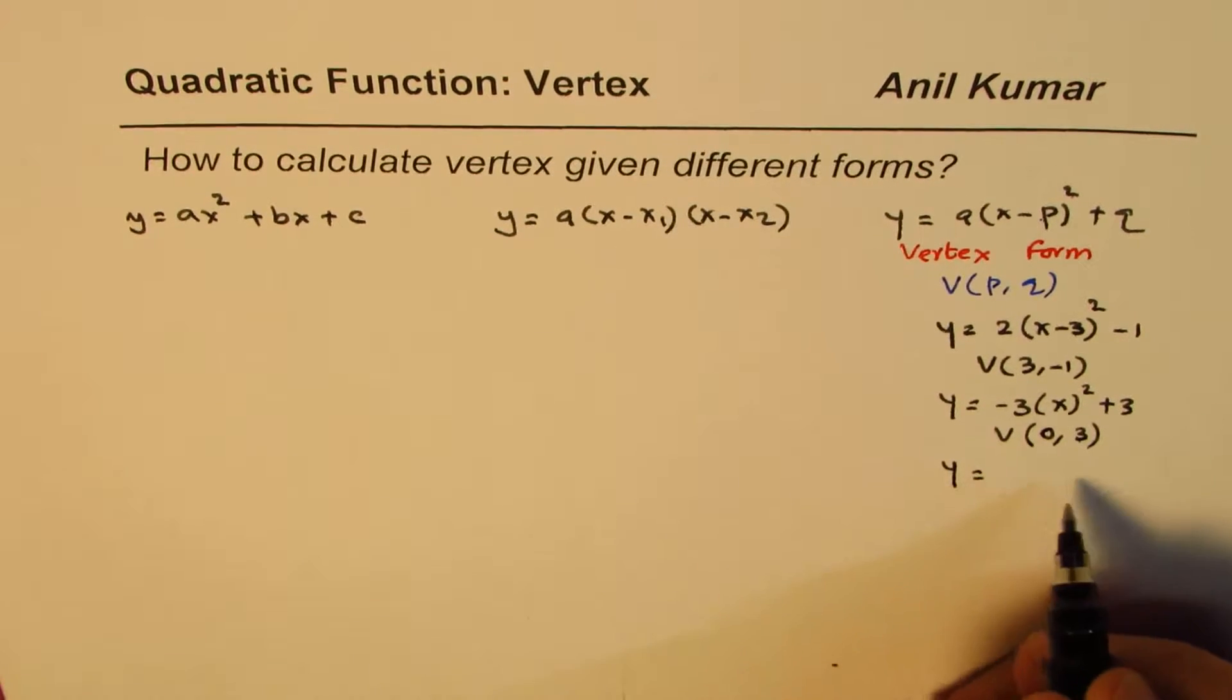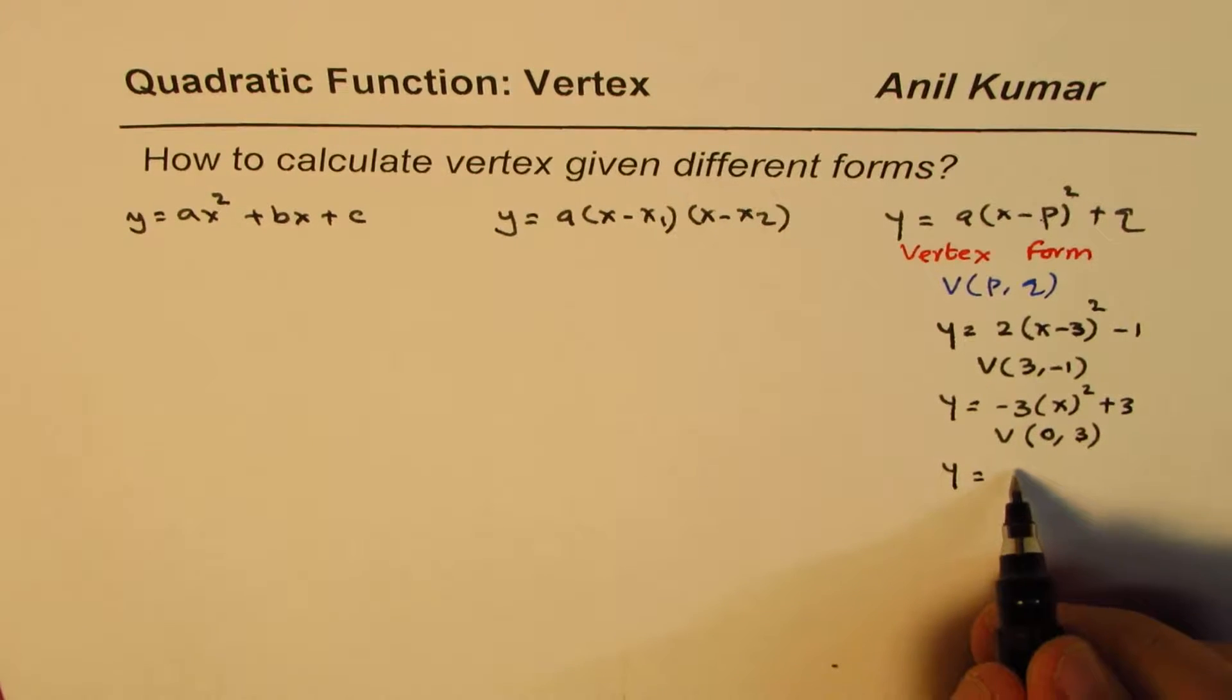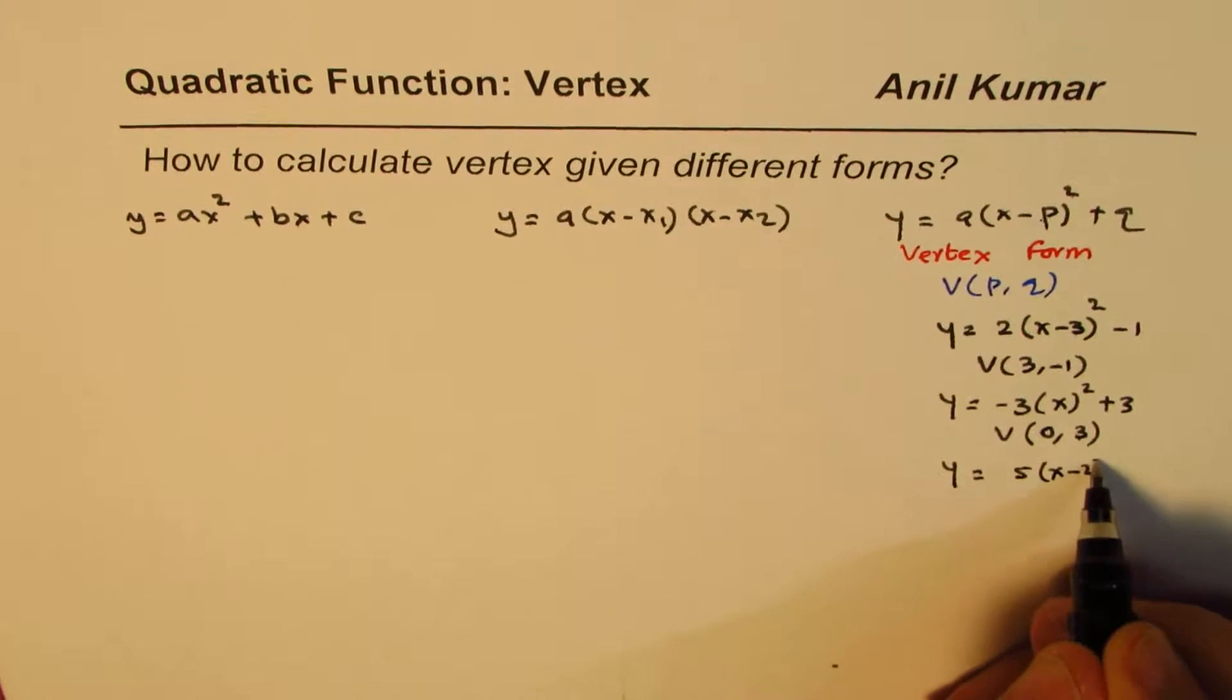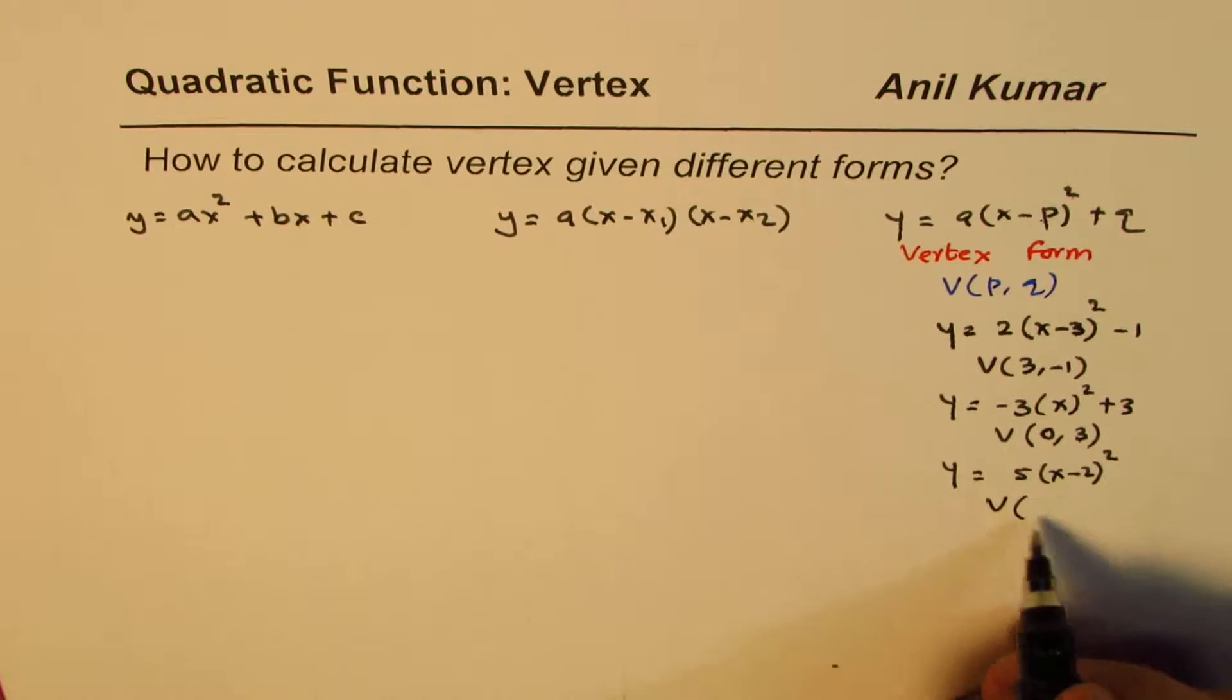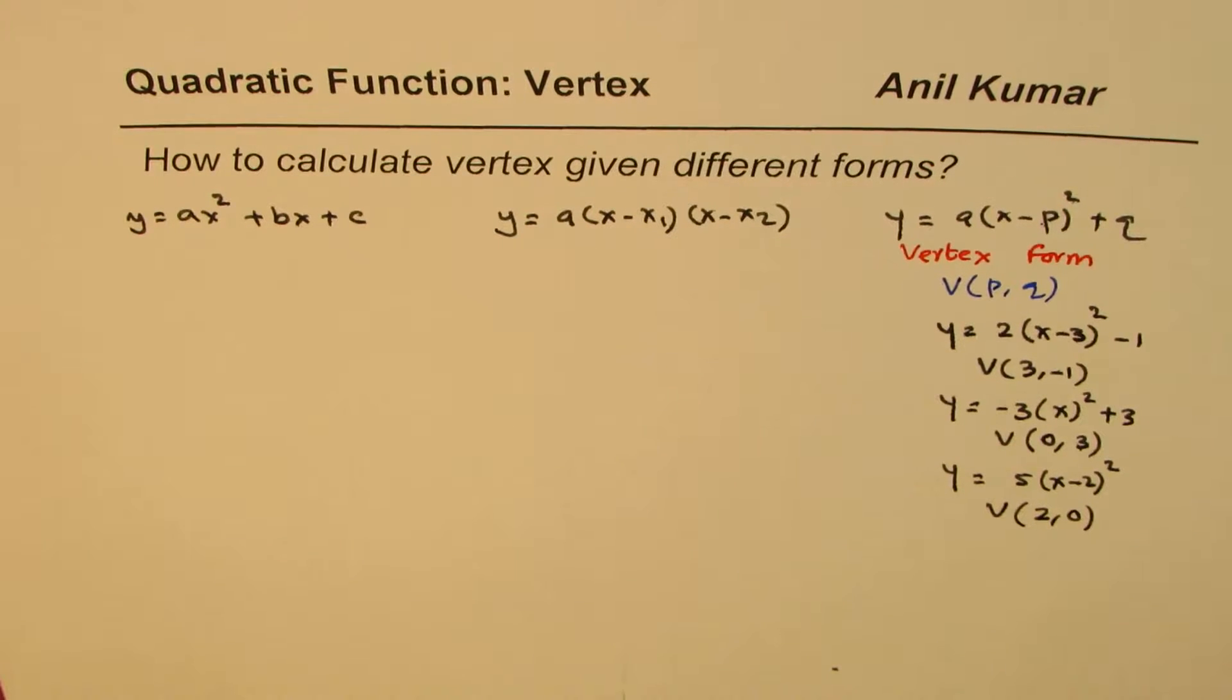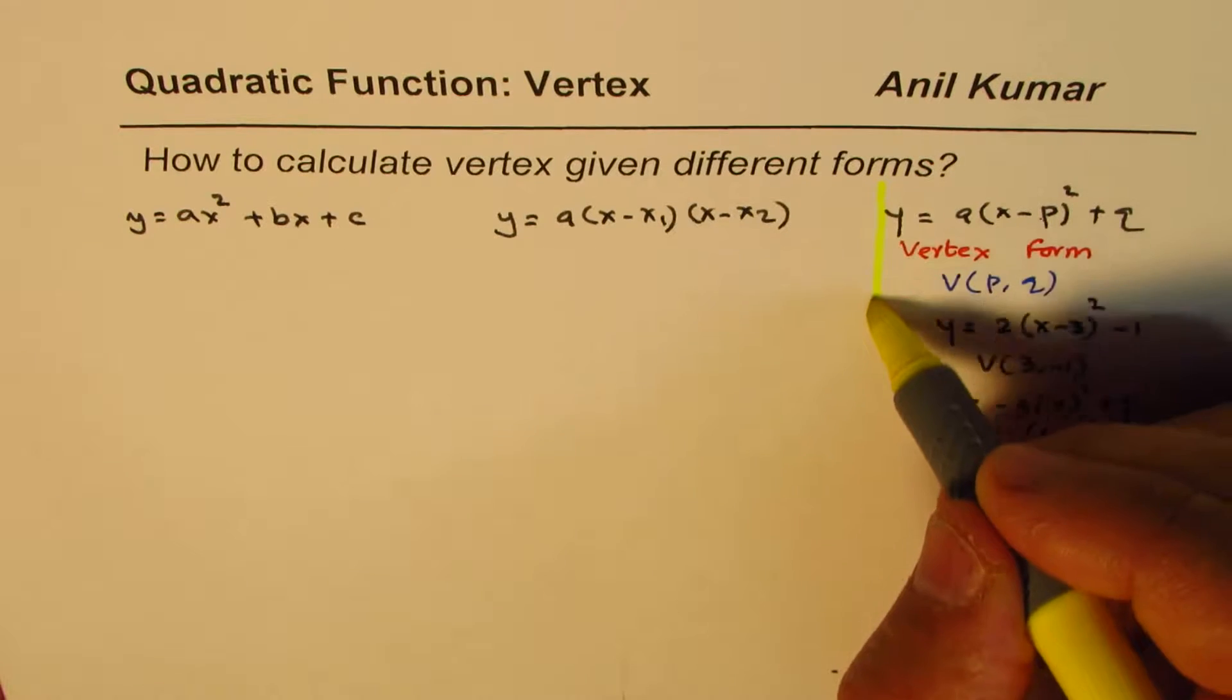And if I have y equals to, let us say, 5(x minus 2)² whole square, now there is this number 0 for q, so the vertex here will be (2, 0). So you could write vertex very easily reading straight from the given equation.